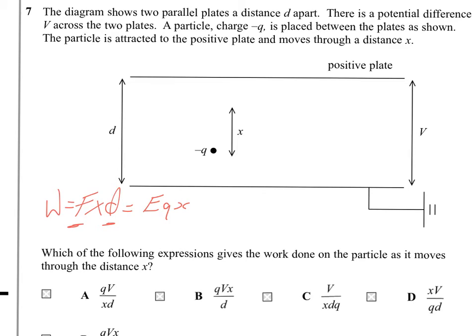And the distance in this case is X. So that's the force times the distance. Now we don't have electric field, but the electric field is V over D.